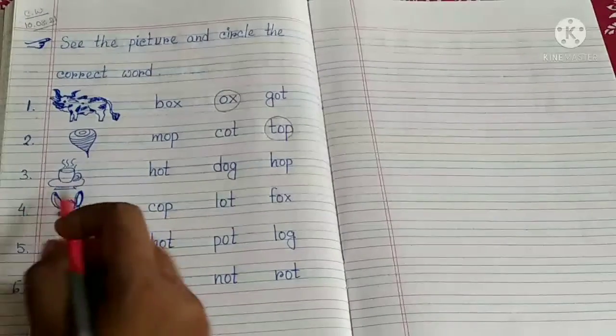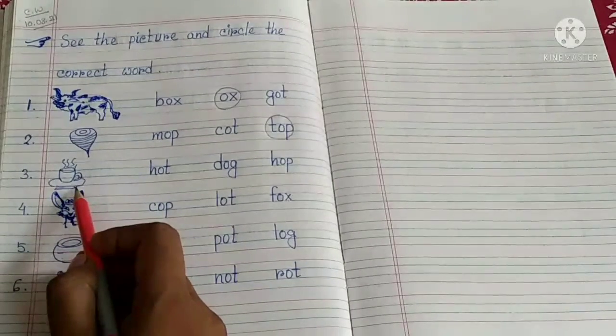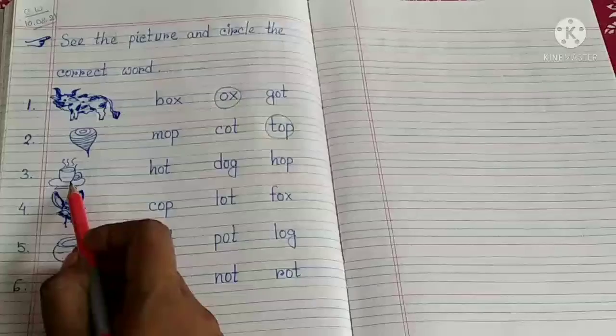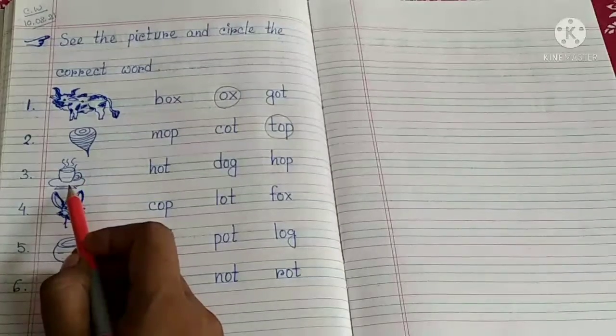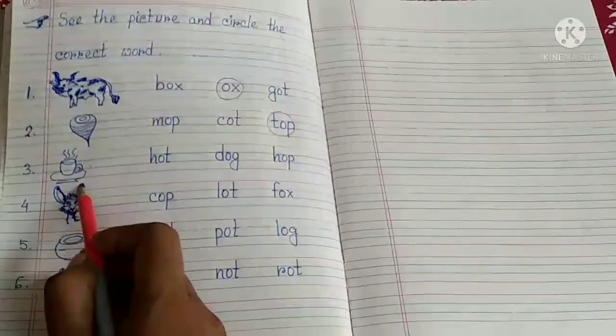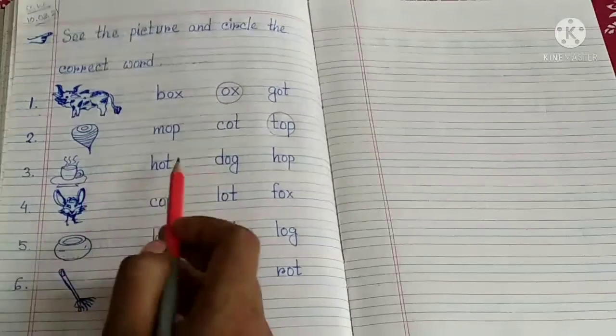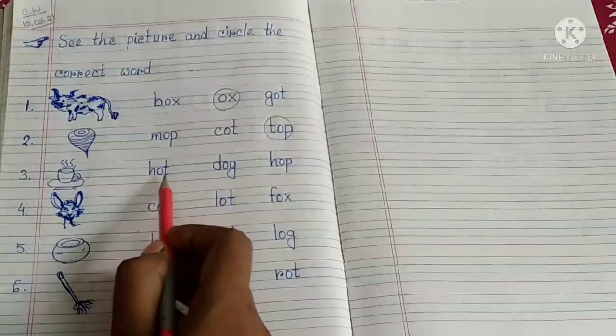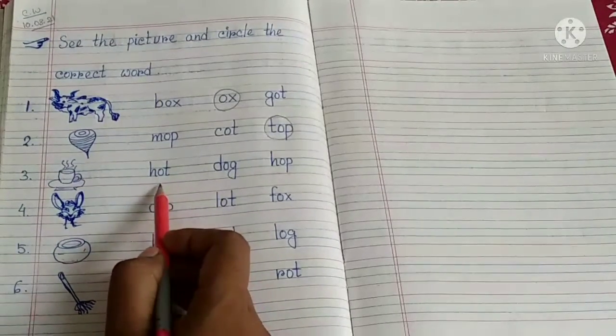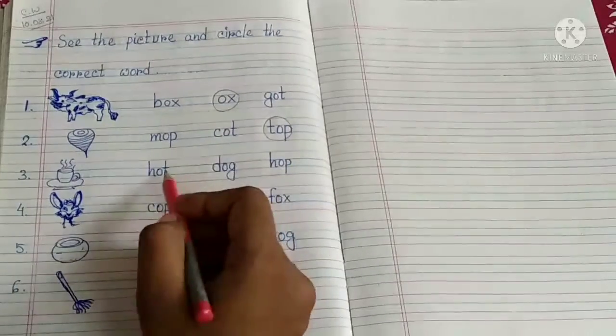Number 3. What do you think? This is hot, right. So let's find the hot spelling: H-O-T, hot. Here we got the word. Let's circle it.